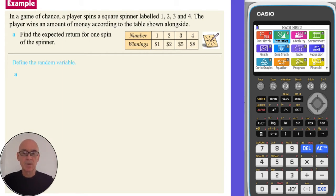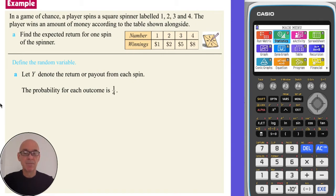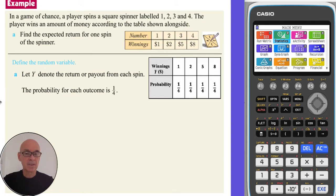So if we start by defining a random variable, we'll let Y equal the return or the payout from each spin. As it's a square spinner, the probability of each outcome is a quarter. And the probability distribution of the payout Y is shown in the table here.